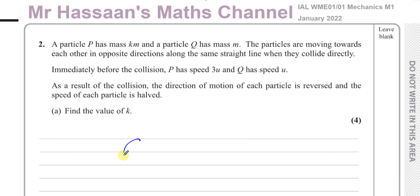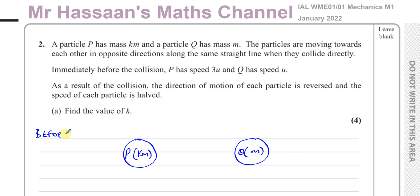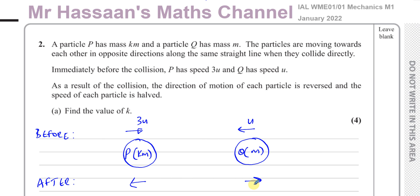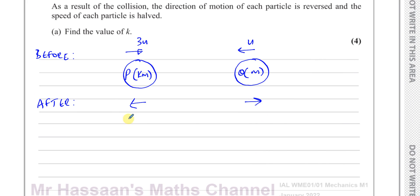Let's make a little diagram. I've got my two masses in circles: mass P which has got a mass of KM, and Q which has a mass of M. I'll put the situation before on top and after underneath. Before the collision, P is moving in this direction with a speed of 3U, and Q is moving in this direction with a speed of U. After the collision, the direction of motion is reversed — P goes in that direction with speed 3U over 2, and Q goes in that direction with speed U over 2.